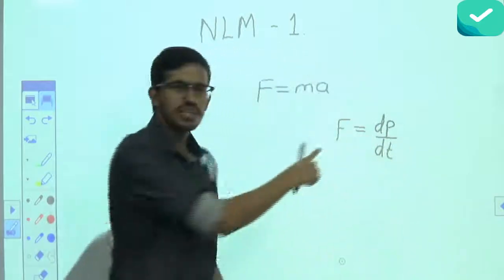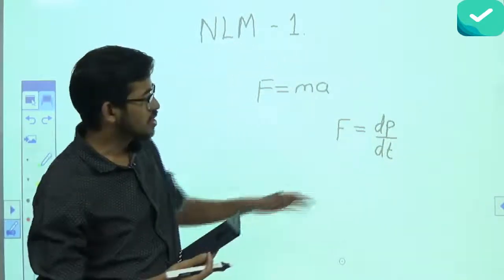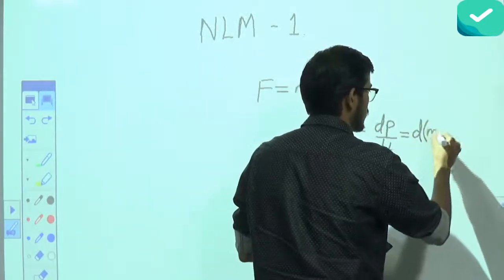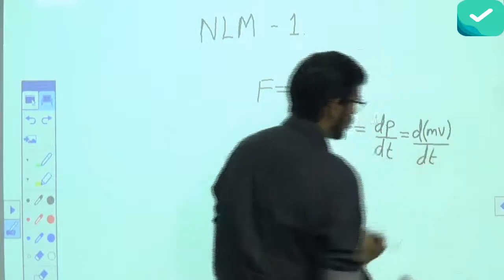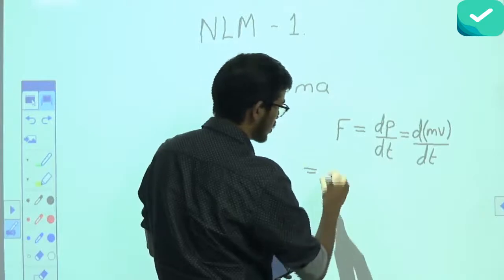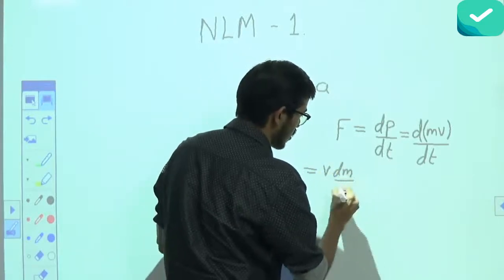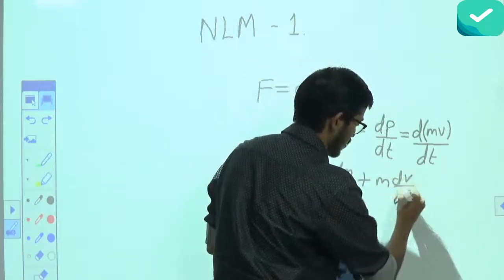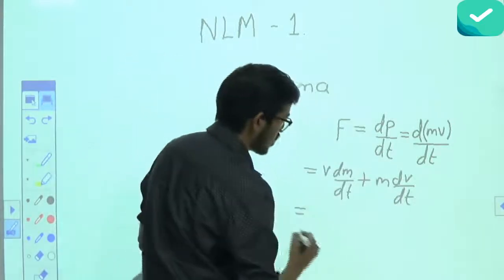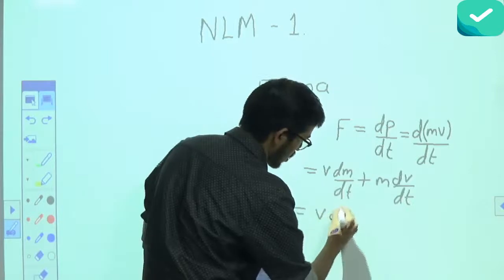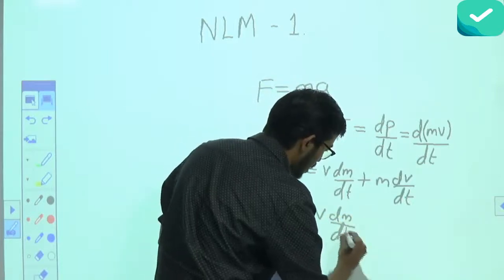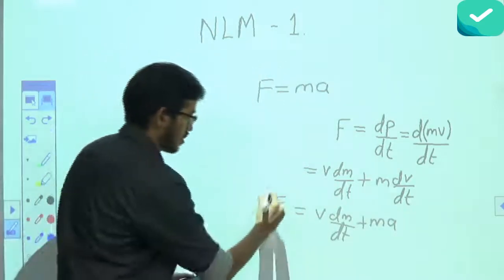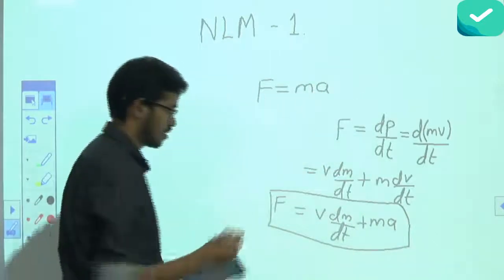dp/dt, with a constant k which we take as one. When we substitute momentum, we get terms: once you keep velocity constant and differentiate mass, and once you keep mass constant and differentiate velocity. So the famous formula F = ma that we know is actually the second term of the original formula. The original formula is v·dm/dt plus ma. This is the original formula — the actual Newton's second law of motion.